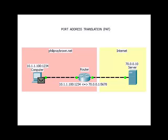Since the server is on the internet, it has no idea of how to send packets back to the computer. The router will place its own public IP address and a port number in the source address of the packet. The router will also map the computer address to the public IP address and put it in its translation table.